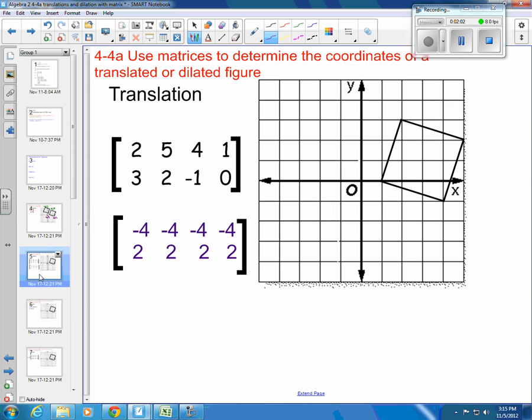So doing that with matrices, we would just take a matrix with our points. So let's look at this point. This is the point (2, 3) where these are my x's and the second row is my y's.